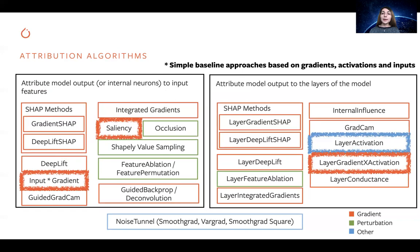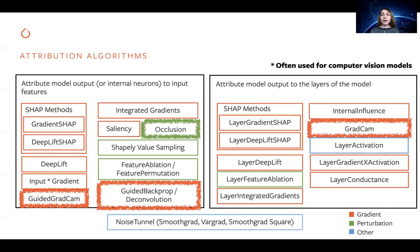Within these algorithms, you'll find simple baselines such as saliency maps, input times gradients, layer activation, and layer gradient times activations. There are also algorithms popular in computer vision communities such as guided Grad-CAM, occlusion, Grad-CAM, deconvolution, and guided backprop. Although popular in computer vision, our implementations are generic enough to be applied to any model meeting the algorithm's requirements — for example, guided Grad-CAM requires the model to belong to the CNN family.